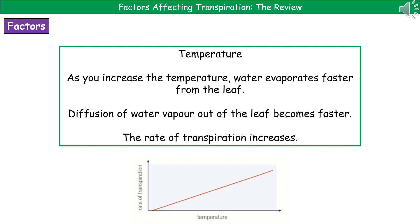The first factor is temperature. As we increase the temperature, water will evaporate faster from the leaf, meaning that diffusion of water vapor out from the leaf becomes faster, and therefore the rate of transpiration increases. The shape of the graph is just a diagonal line — the higher the temperature, the faster the rate of transpiration.